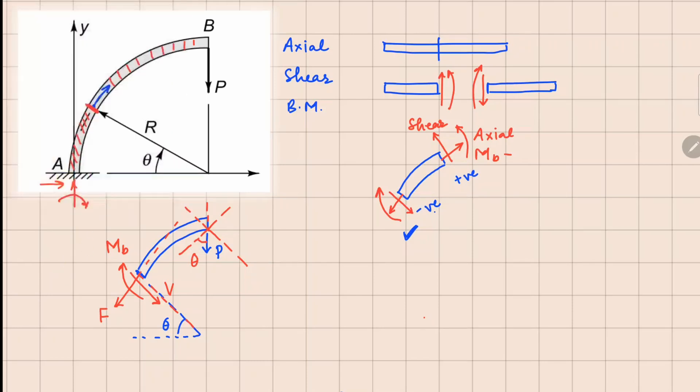So if I do the force balance along the axial direction, I will see that your force F plus P cos theta is going to be zero. This is happening along this direction. Now along the shear force direction, which is this one right here, we are going to have V plus P sin theta equals to zero.